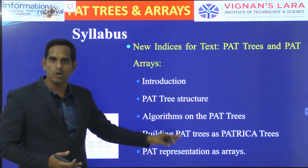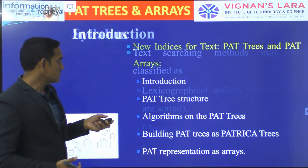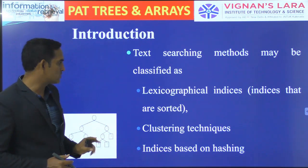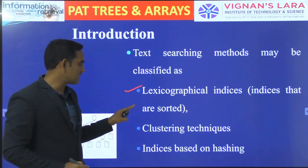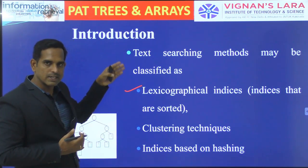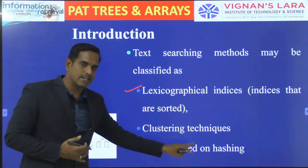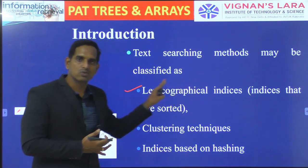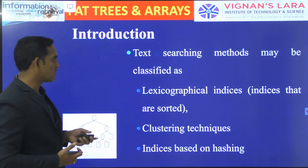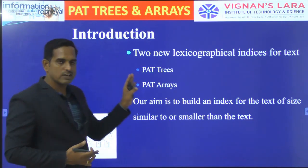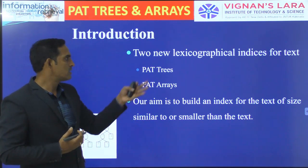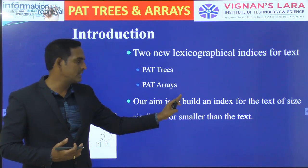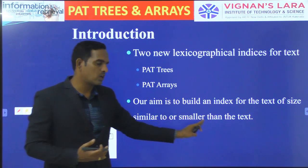Starting with the introduction: so far we have seen text searching methods, which can be broadly classified into three types — lexicographical indices, which are present in sorted order; clustering techniques; and indices based on hashing. For now we are focusing on lexicographical indices. The two new lexicographical indices we are trying to learn are TRIES and arrays, and our aim is to build an index for a text of size similar to or smaller than that text.